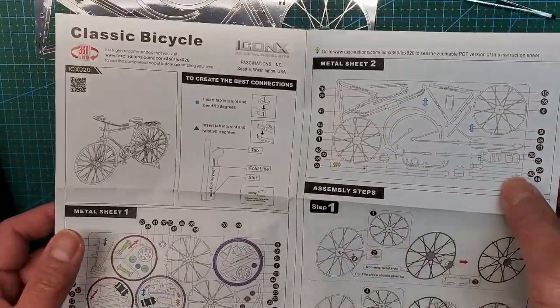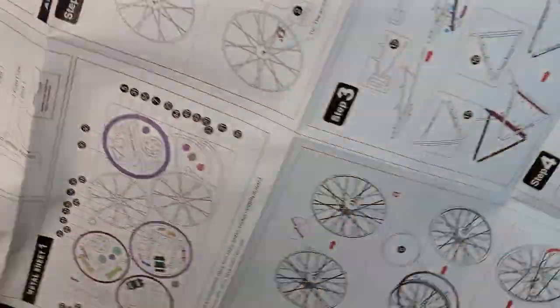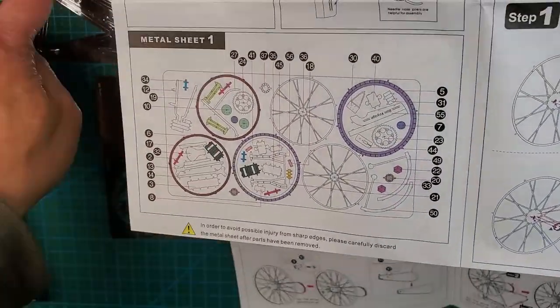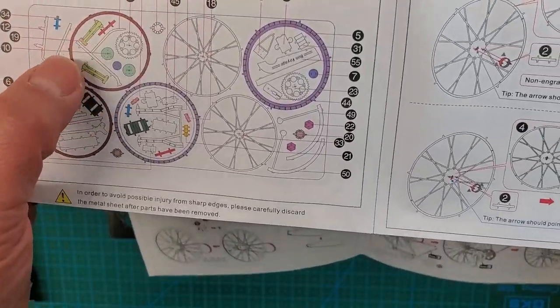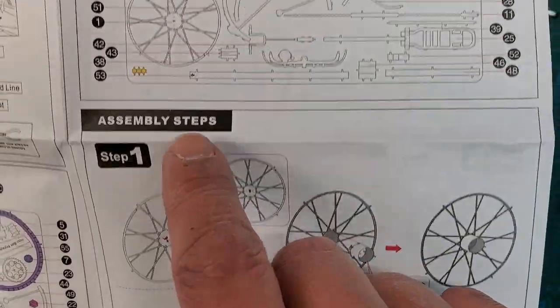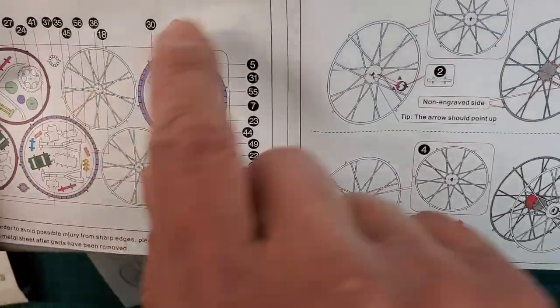So the instruction is just one sheet of paper. Two-sided though. A lot of steps. Each sheet has the parts that are on them numbered. So on the first step here it tells you what part you want. So I need to look for that one in either one of these two sheets.